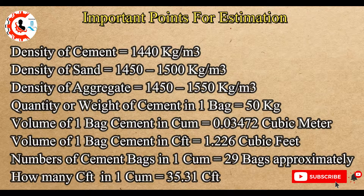Important Points for Estimation. Density of cement equals 1440 kg per cubic meter. Density of sand equals 1450 to 1500 kg per cubic meter. Density of aggregate equals 1450 to 1550 kg per cubic meter. Quantity or weight of cement in one bag equals 50 kg. Volume of one bag of cement in cubic meter equals 0.03472 cubic meter.